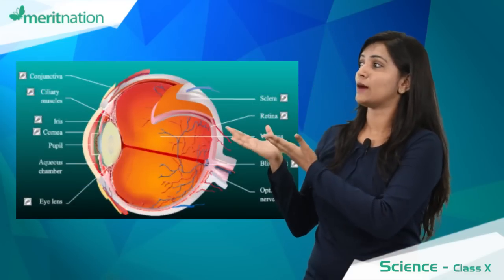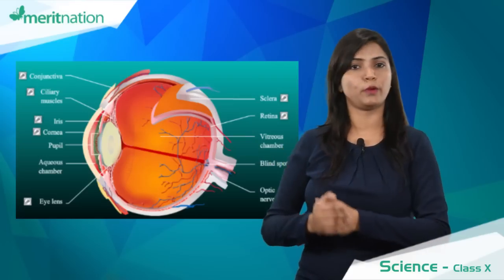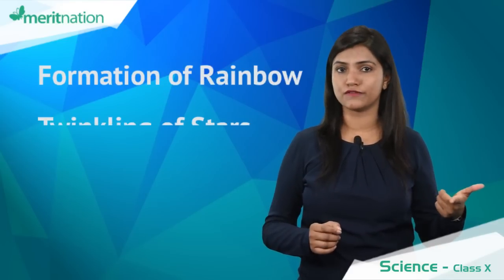Moving on to the next chapter, which is human eye and the colorful world. Again, the labeled diagram of human eye is very important, prepare accordingly. Then the defects of vision, very very important. We have got three defects of vision in our syllabus: myopia, hypermetropia, and presbyopia. We need to focus on the causes and the corrections of these defects. The next important thing from this chapter, and you can pretty much expect at least one question, either out of formation of rainbow or twinkling of stars or advanced sunset and delayed sunrise. So that was in the physics portion.